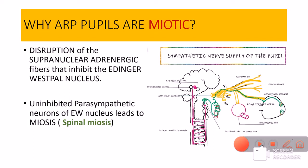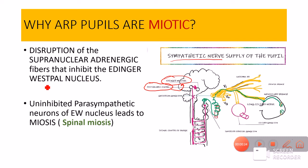Why is there miosis or constriction in Argyle Robertson pupil? In my previous video on the nerve supply of the pupil, I told you that the Edinger-Westphal nucleus is associated with parasympathetic nerve supply — that is, constriction of the pupil — and the hypothalamic center is associated with sympathetic nerve supply — that is, dilatation of the pupil. This hypothalamic center constantly inhibits the Edinger-Westphal nucleus. In Argyle Robertson pupil, the hypothalamic center is affected such that there is disruption of this inhibition, and the Edinger-Westphal nucleus or parasympathetic neurons are firing without any inhibition, causing miosis or constriction of the pupil. This is called spinal miosis.